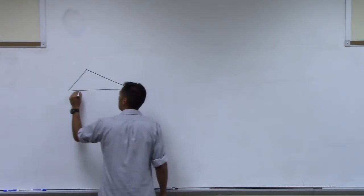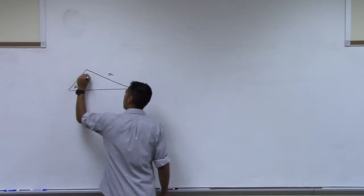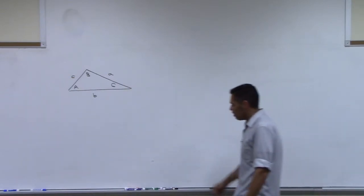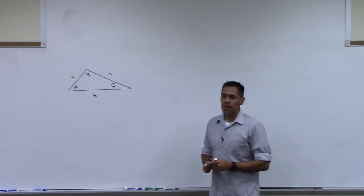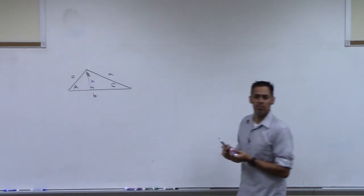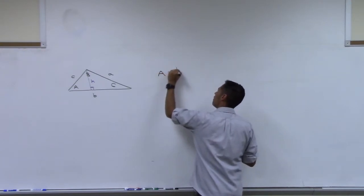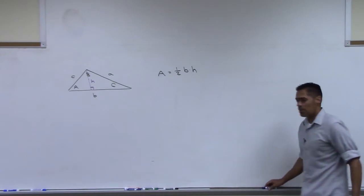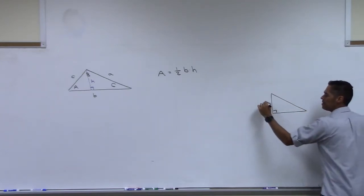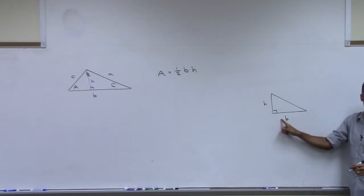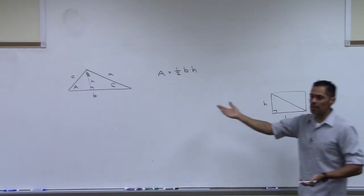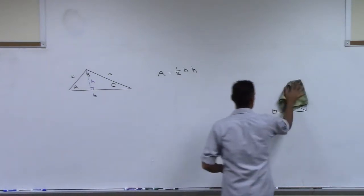Let's call the sides: angle A makes little a, angle B makes little b, angle C makes little c. There's an arbitrary triangle. We've already learned somewhere back in elementary school what the area of a triangle is. If you know the height of this triangle, the area is one half base times height. With a right triangle, if this is the height and this is the base, the area is half of this times this, because if you did the whole thing it would be a rectangle — twice as much — so you half it.